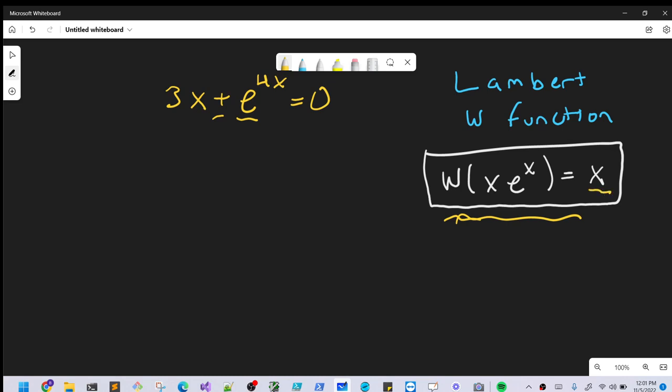So to start with, what I'm going to do, we'll take our equation. I'm going to subtract the 3x on both sides. So we'll end up with e to the 4x equals minus 3x.